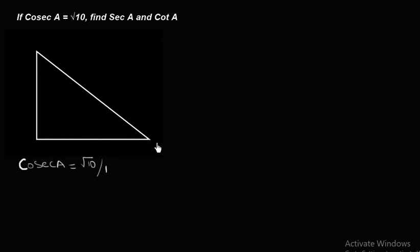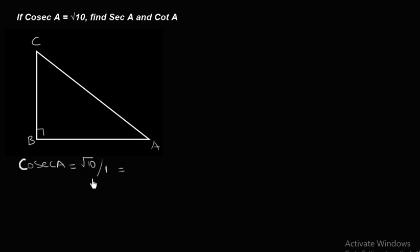Let me name this right-angle triangle. We have angle A, angle B, and angle C, with the right angle at B. So cosecant A, being the reciprocal of sine A, equals hypotenuse over opposite. Here the hypotenuse is root 10 and the opposite side is 1.